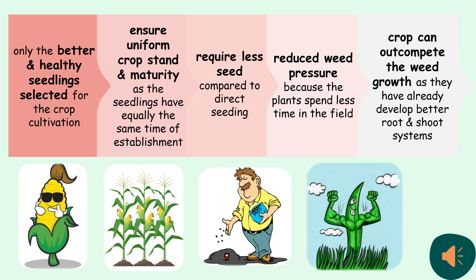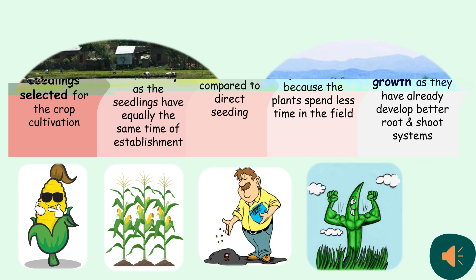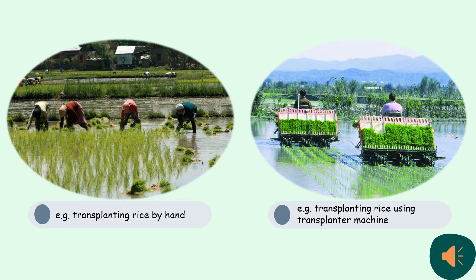Several benefits of transplanting are: only the better and healthiest seedlings are selected, uniform crop strength and maturity, requires less seed, reduces weed pressure, and provides the crop a head start over emerging weeds. For example, in Asia, transplanting is one of the common practices for weed control in rice cultivation.